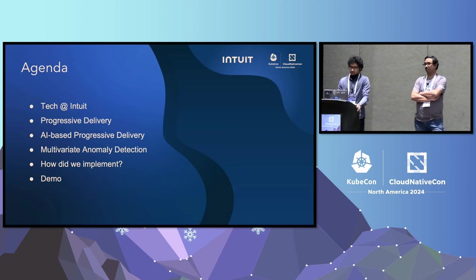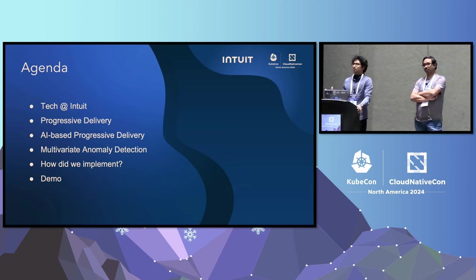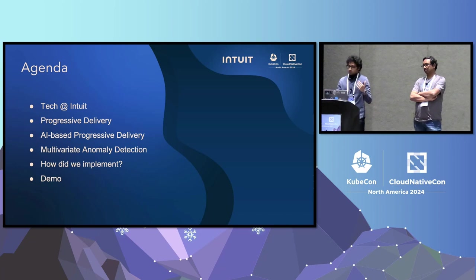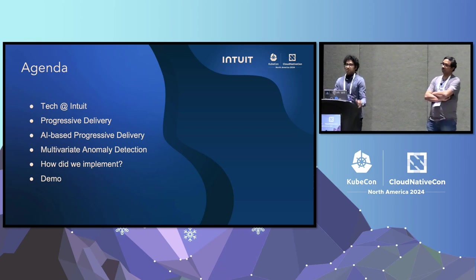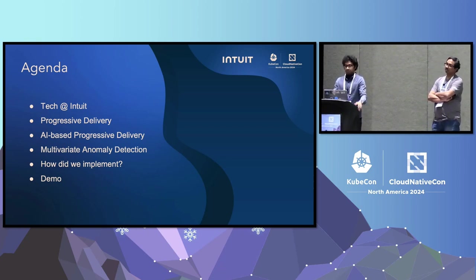The agenda is that we're going to start with what is progressive delivery, talk about that, and then go straight into AI-based progressive delivery. Finally, we will go a bit deeper into multivariate anomaly detection and how we implemented that. And then, a demo.